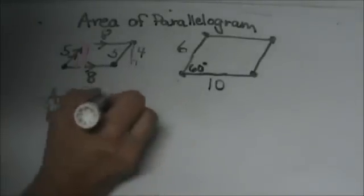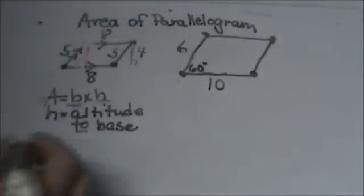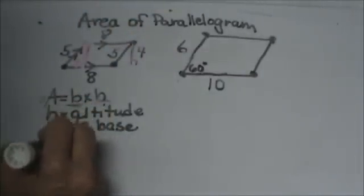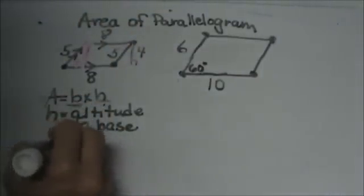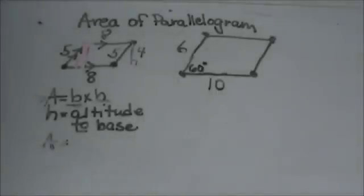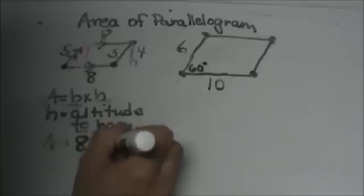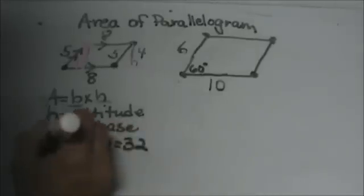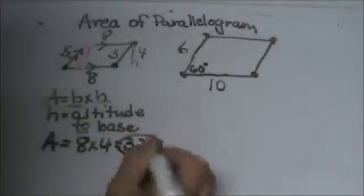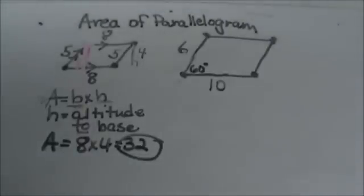So area is equal to 8 times 4 which is 32. So that is how you find the area of a parallelogram.